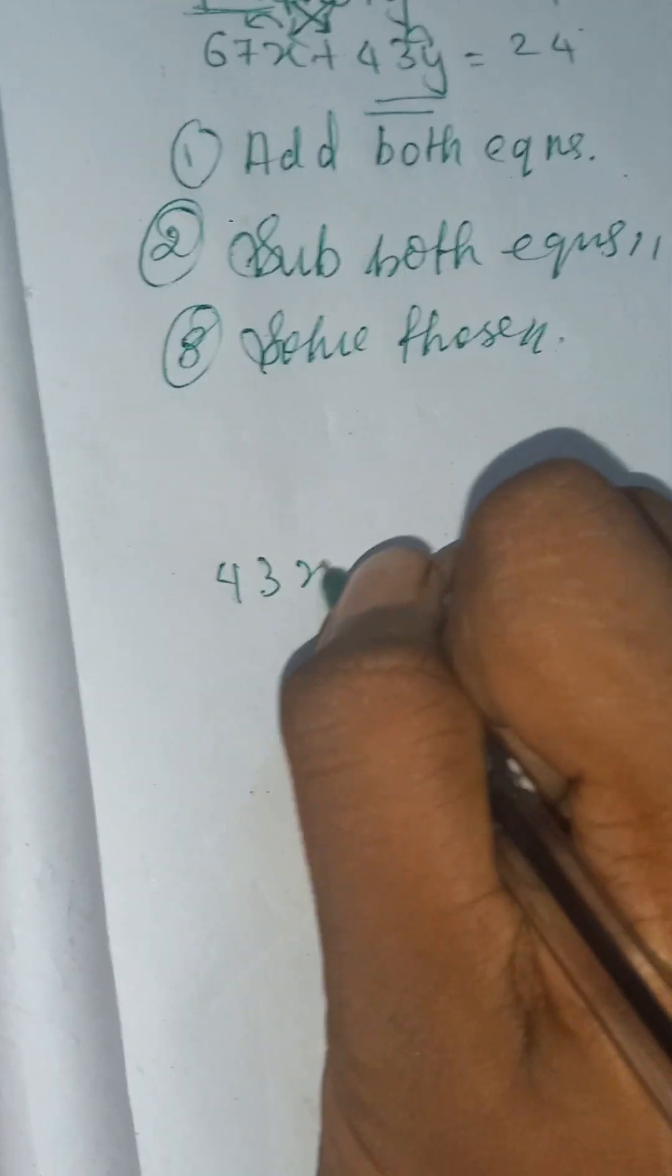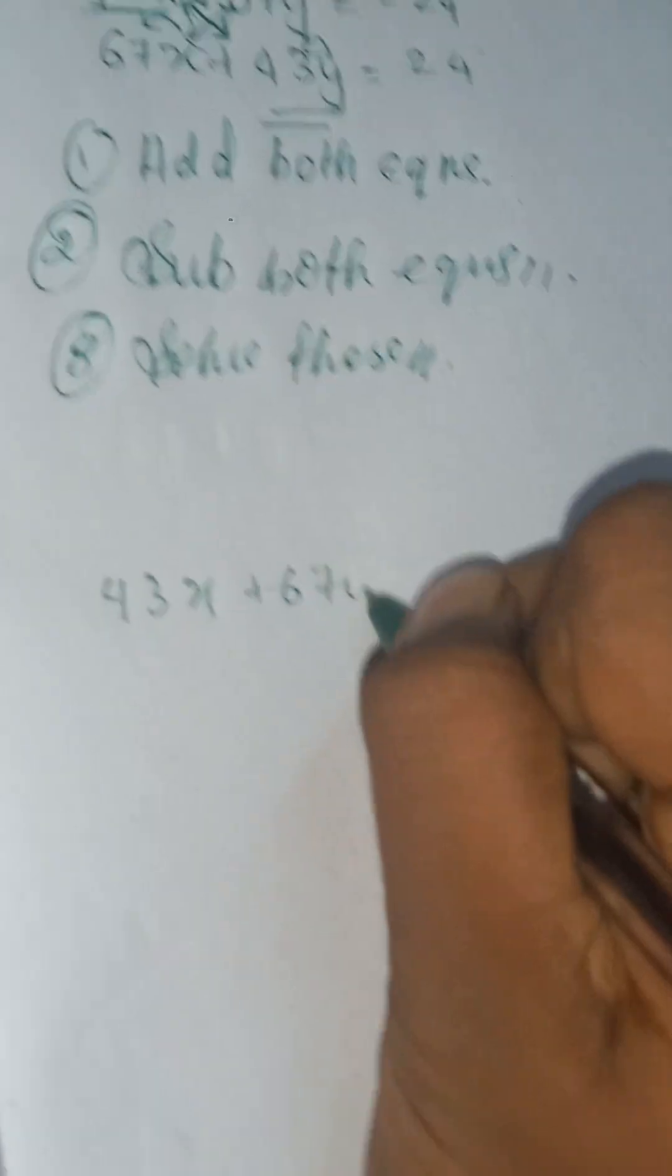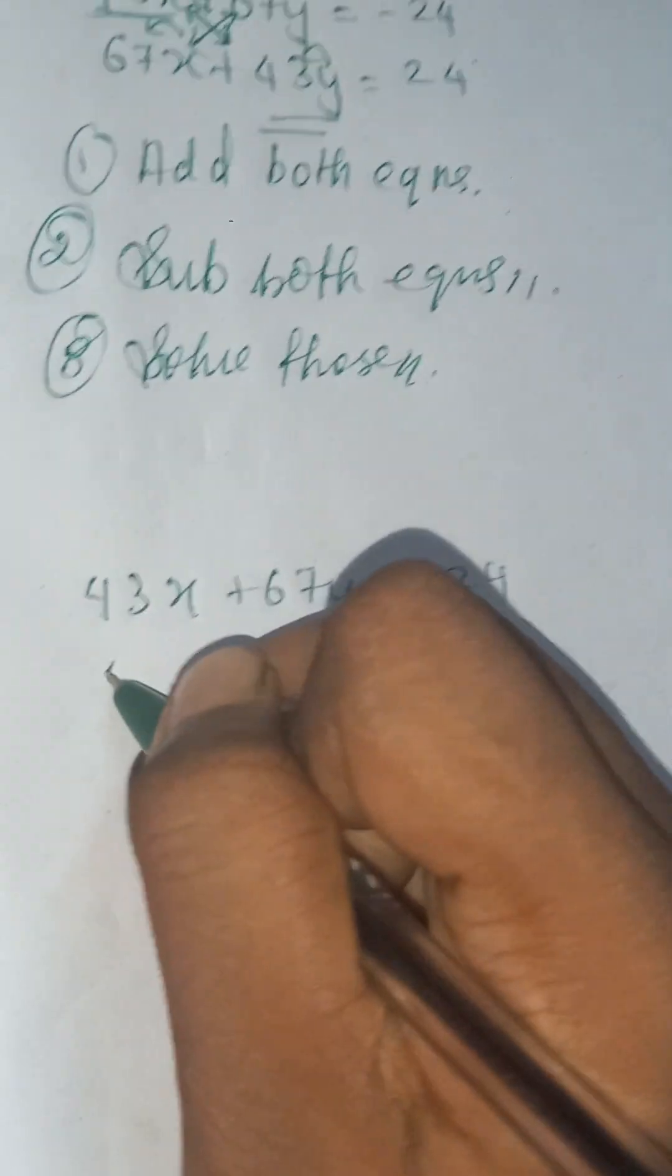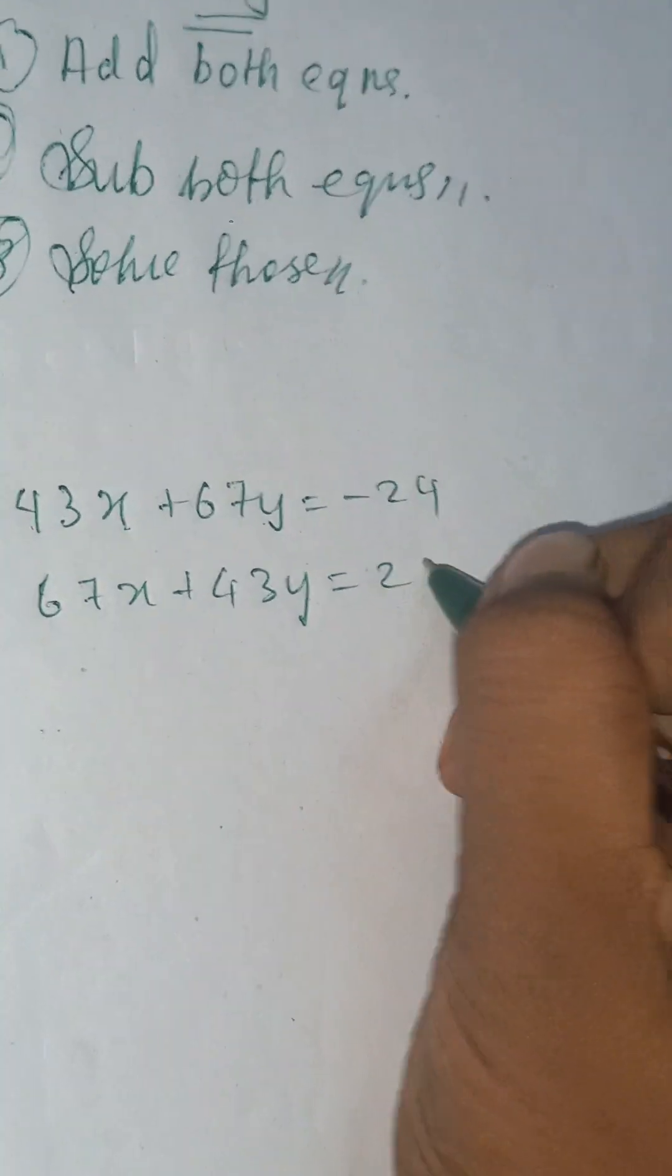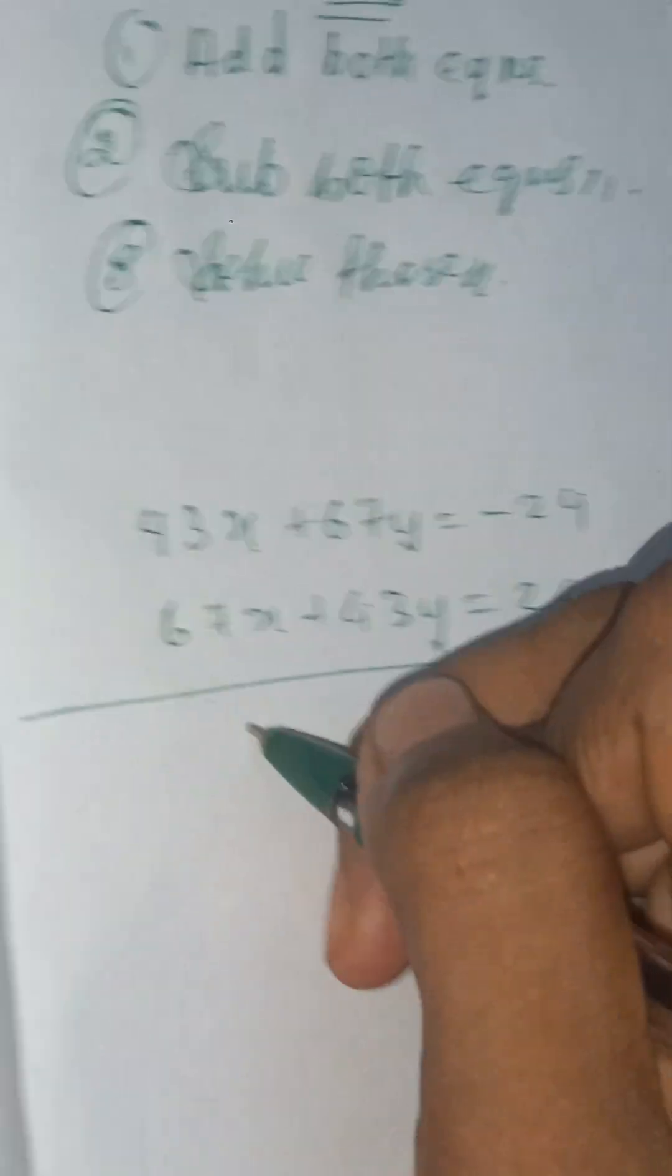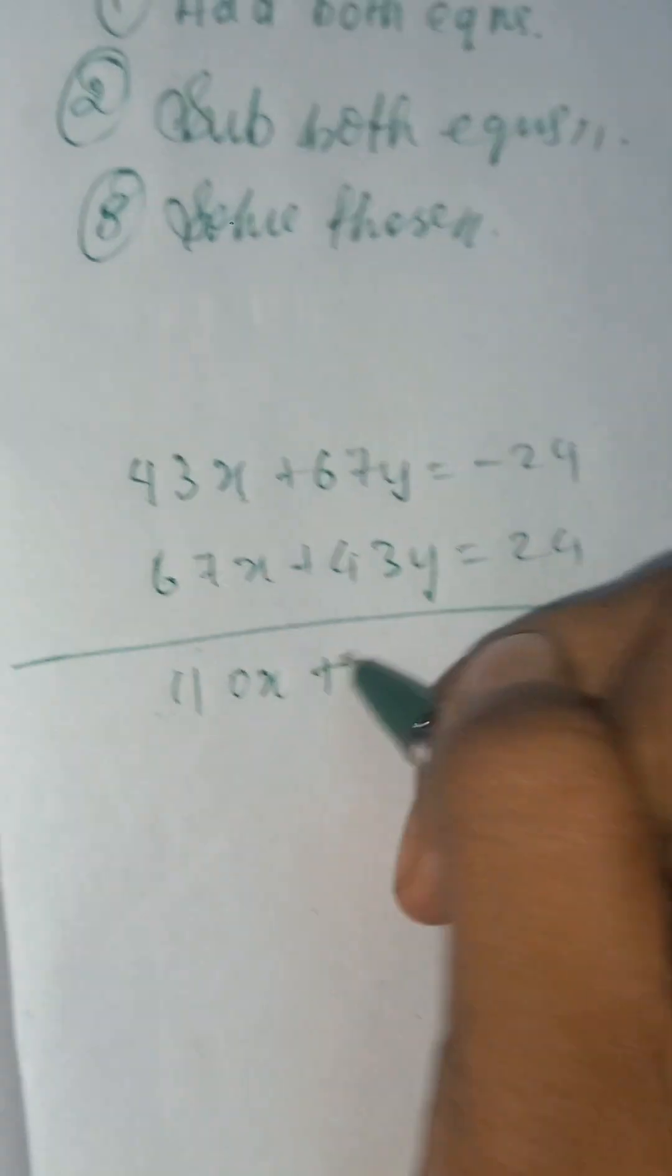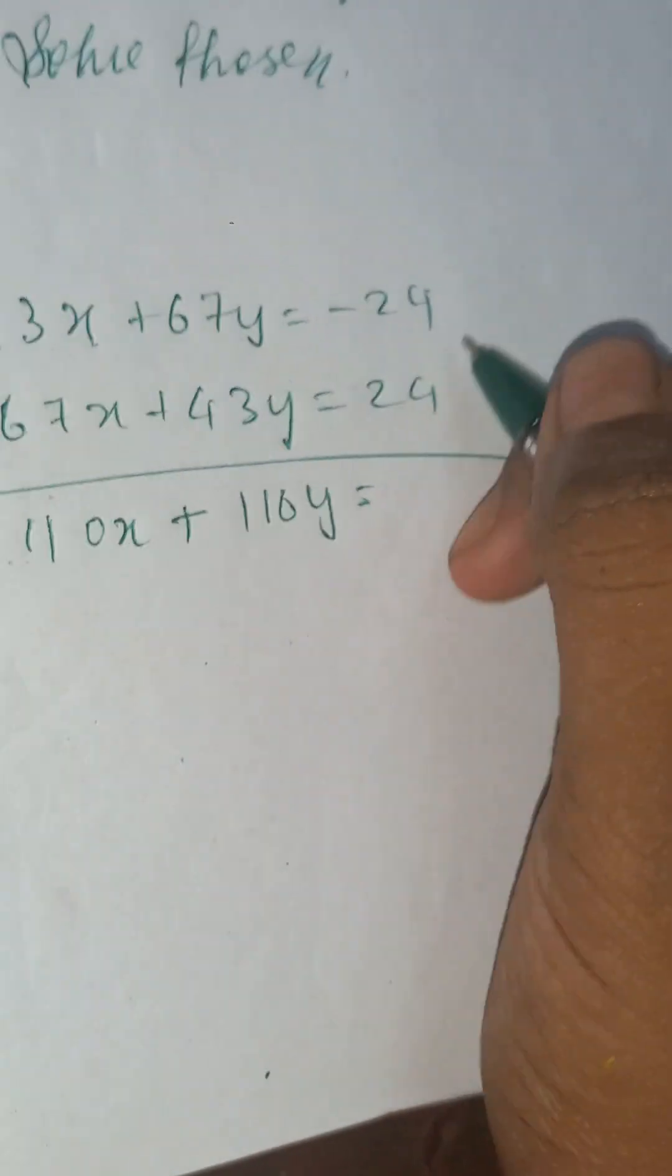Now 43x + 67y = -24, and 67x + 43y = 24. Now add these things, you will get 110x + 110y which is equal to zero.